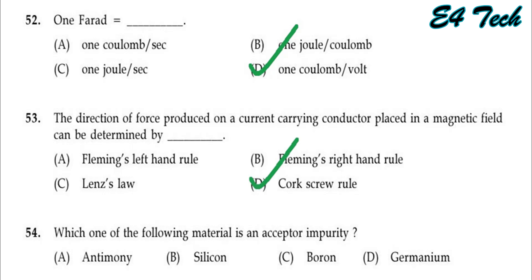Which of the following material is an acceptor impurity? The options are antimony, silicon, boron, germanium. Boron is an acceptor impurity. Option C.